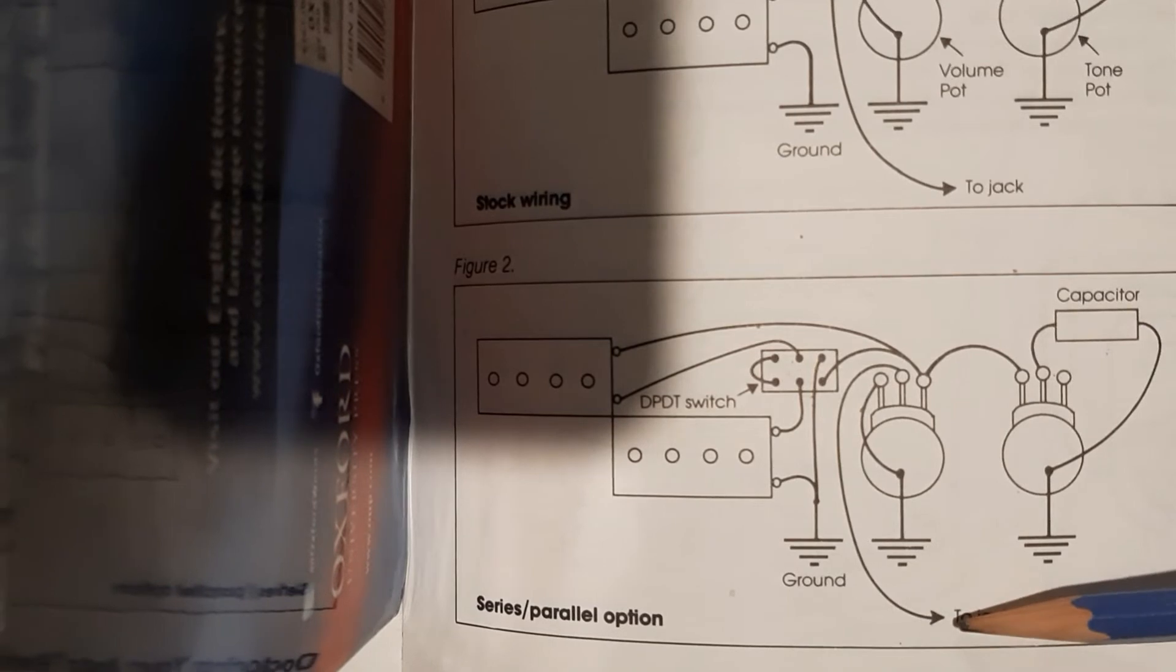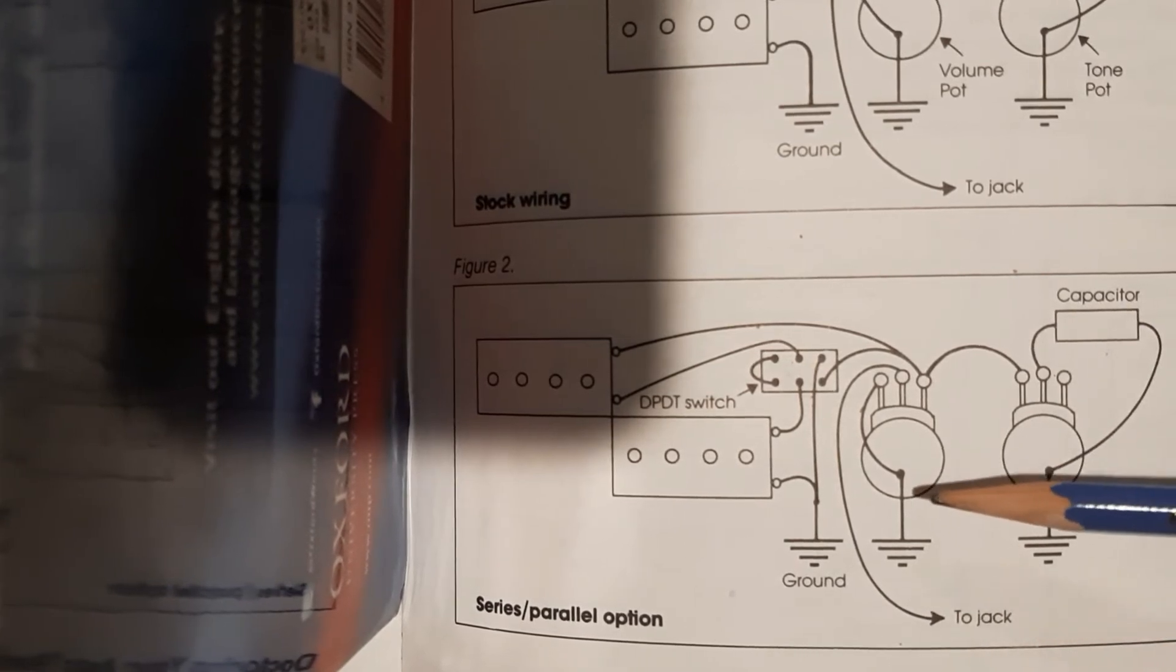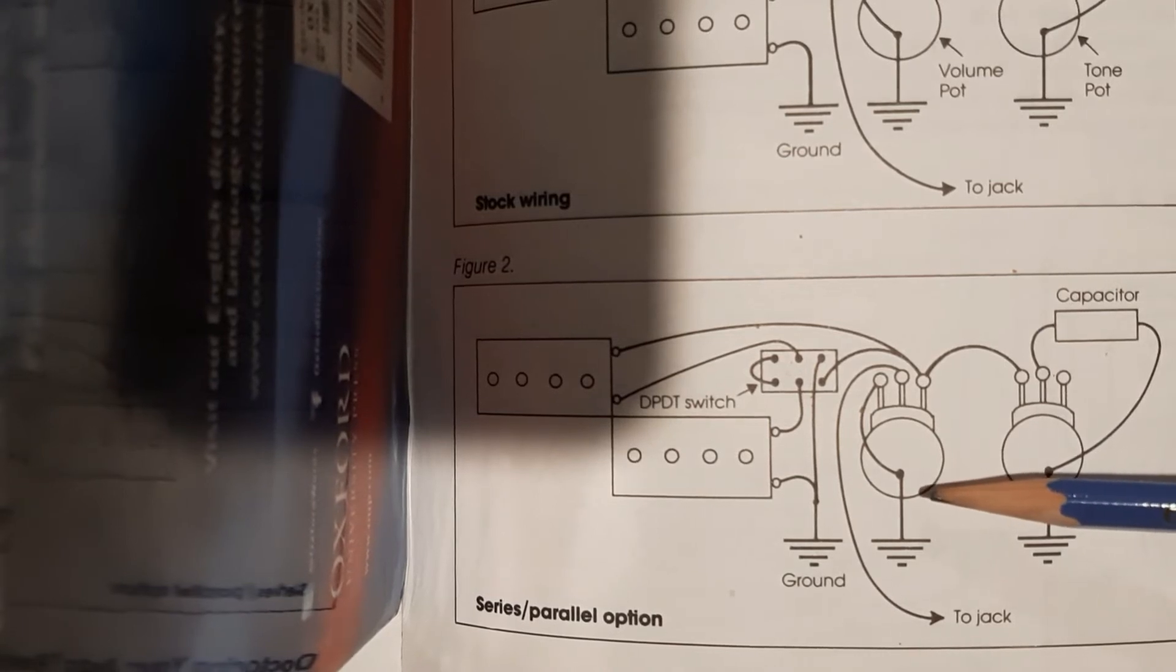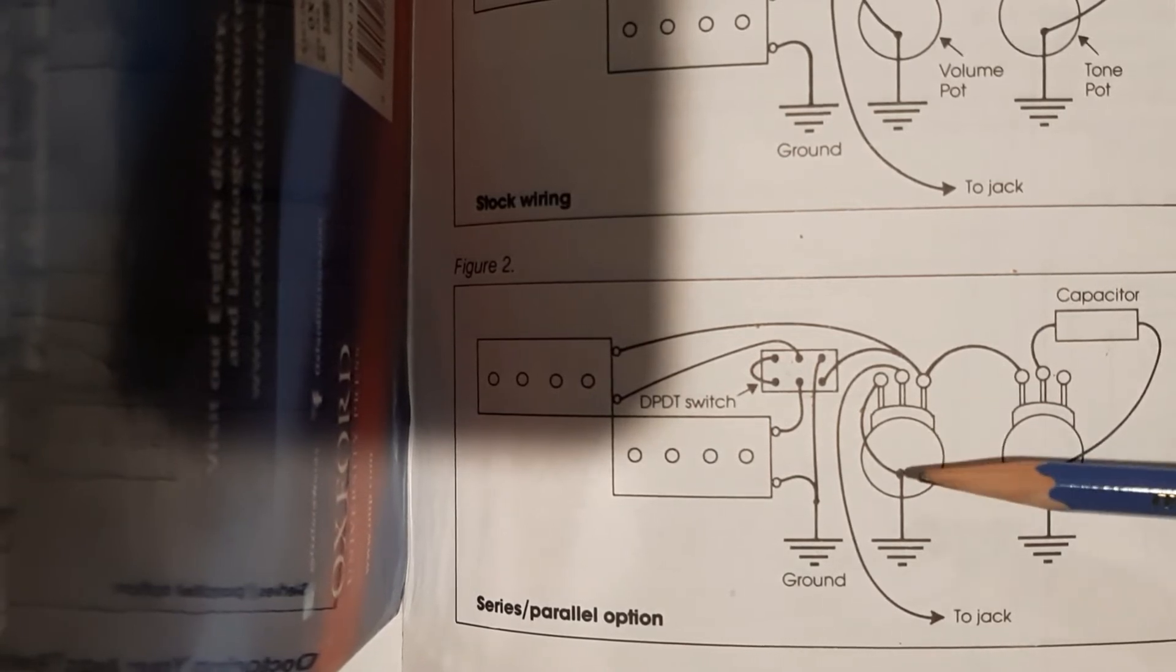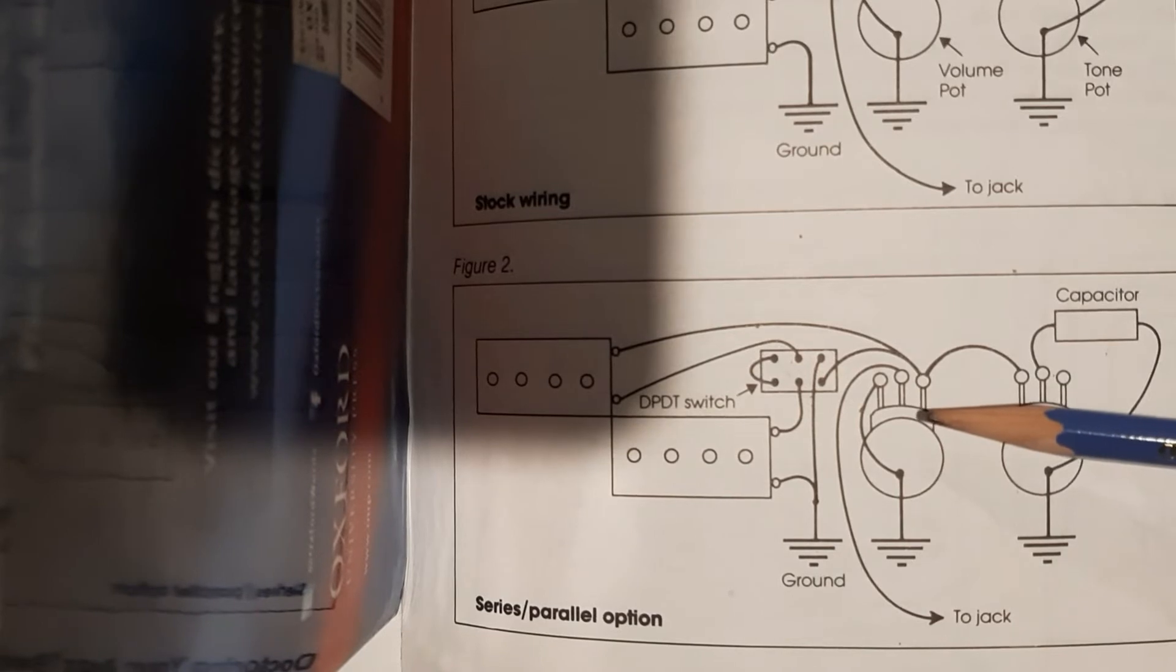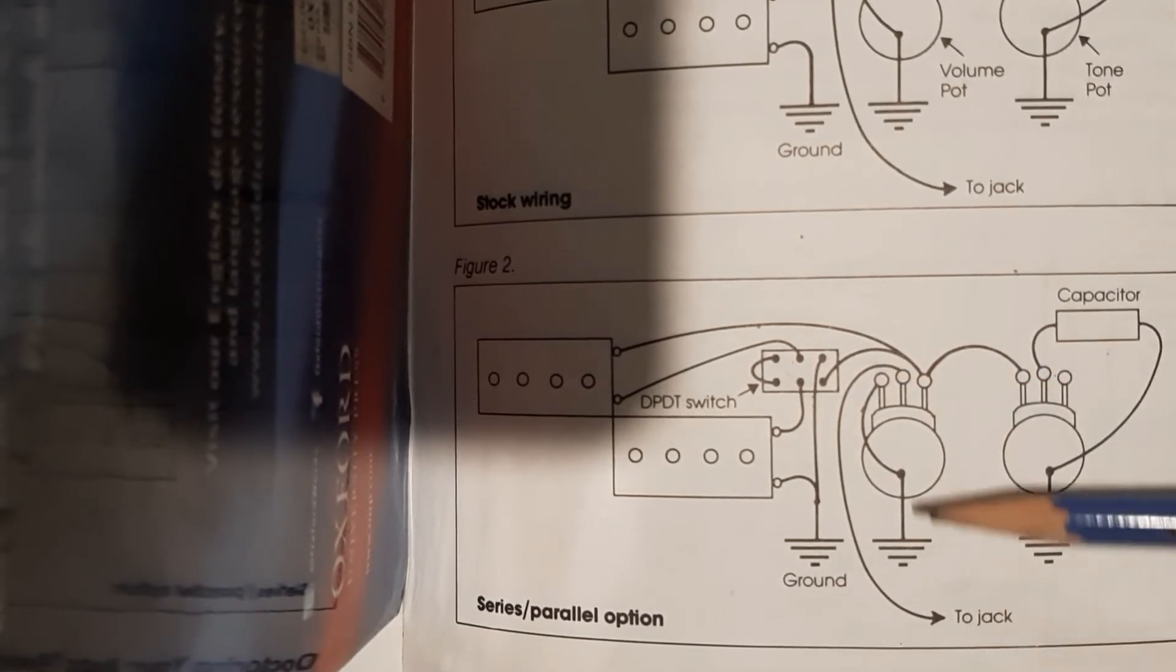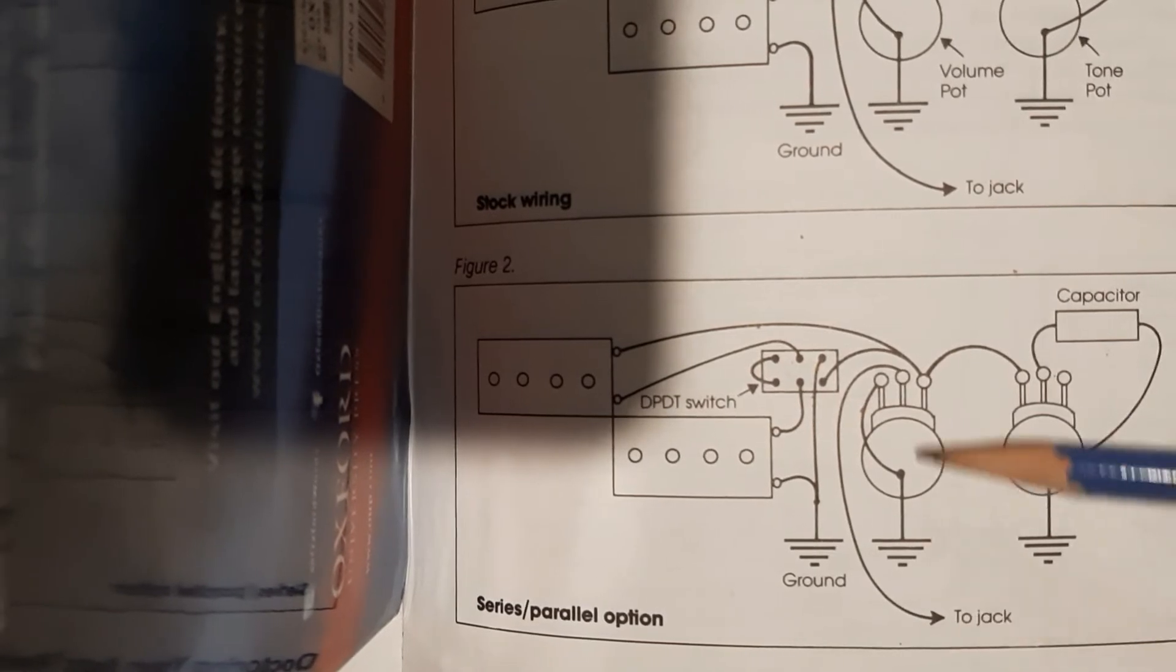That's why different volume pots sound different. The more resistance you have in the volume pot, the less chance there is of the high end getting through that resistance and going to ground.